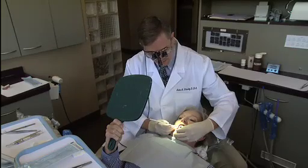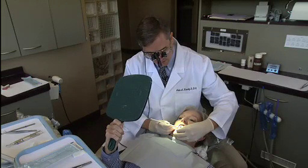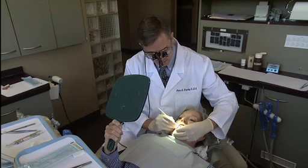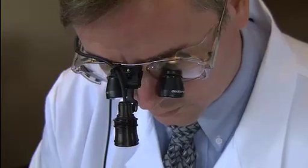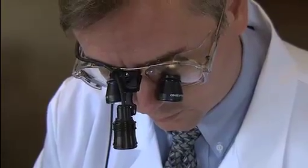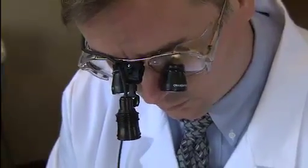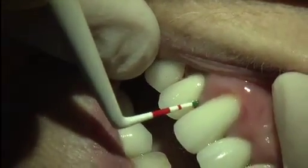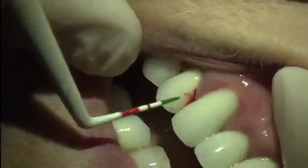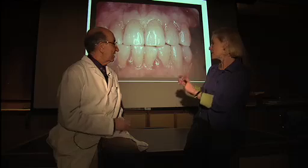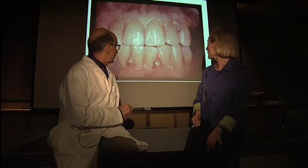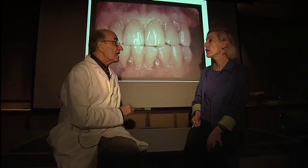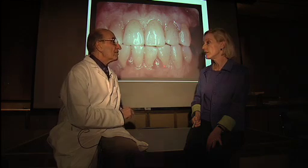To check for gum disease, doctors use a ruler instrument. As pockets of inflammation get bigger, so does the space between the teeth and gums. 'I'm down into about four millimeters here, and that's starting to get what we would call a pocket.' The bacteria starts on the tooth surface and then creeps underneath the gum.